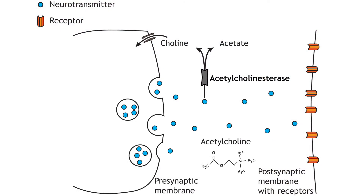After neurotransmitters have been released into the synaptic cleft, they act upon post-synaptic receptors as covered in the previous chapters. That action must be terminated in order for proper neuronal communication to continue. This is accomplished mainly through two processes: neurotransmitter transport and/or degradation.